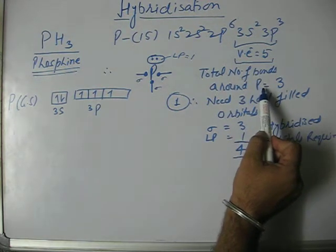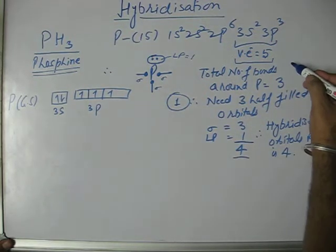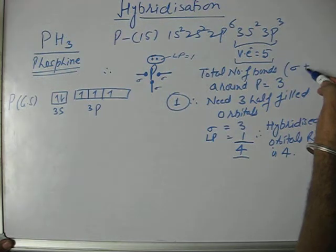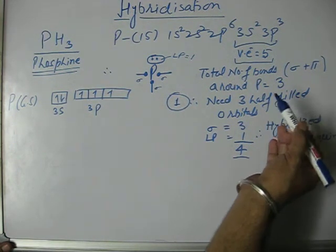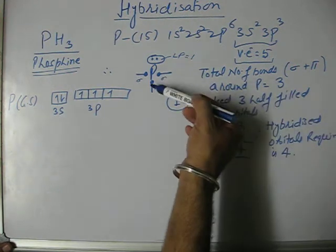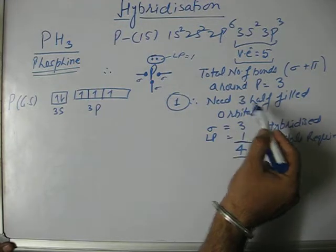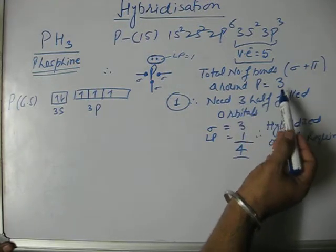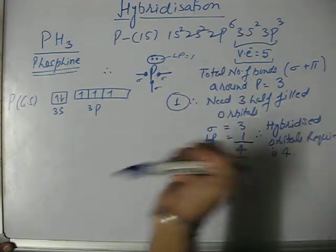Total number of bonds around phosphorus means total number of sigma plus pi bonds. As there is no pi bond here, the total bonds are three. We need three half filled orbitals to form three covalent bonds.